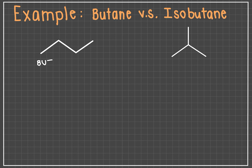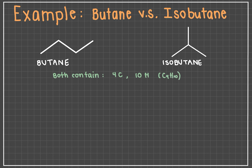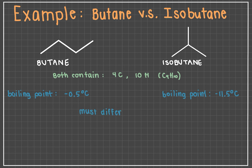Take butane and isobutane as an example. Butane and isobutane both contain four carbon atoms and 10 hydrogen atoms. However, a quick search for their physical properties shows immediate differences. The boiling point of isobutane is negative 11.5 degrees Celsius, whereas butane's boiling point is negative 0.5 degrees Celsius. In future lessons, you will learn the reason behind this variance in boiling points, but it's clear that this difference has something to do with their atom connectivity.